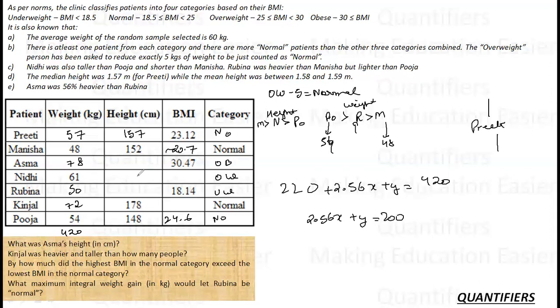This is also sorted. I can also calculate Kinjal's weight, which I can do. For Asma I can calculate: 78 upon x square equals 30.47, so height will come to be around 160.